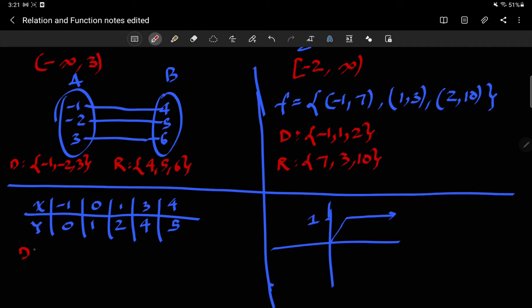The domain here is all the inputs. So negative 1, 0, 1, 3, 4. And the range, the corresponding outputs is 0, 1, 2, 4, 5.